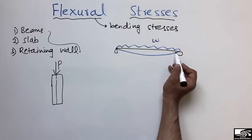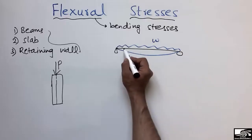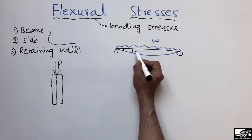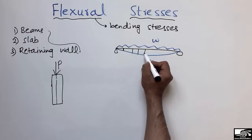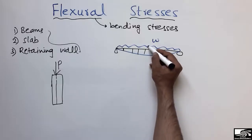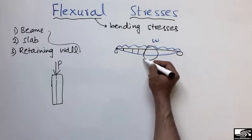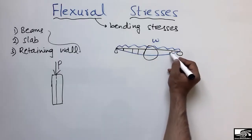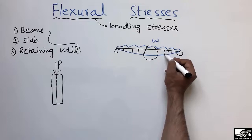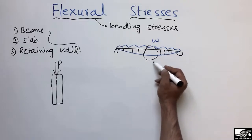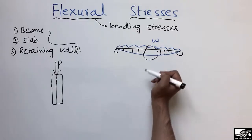Due to this deflection, we have flexure stresses throughout the length of the beam. At the support portions there will be less flexure stresses, increasing toward the middle, and the maximum flexure stresses will occur at the mid-span of the beam.